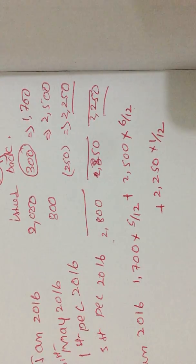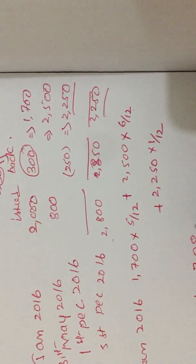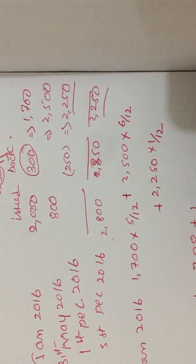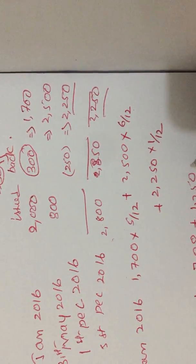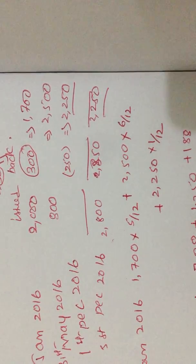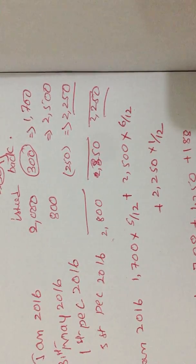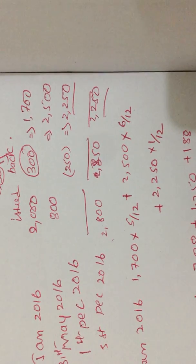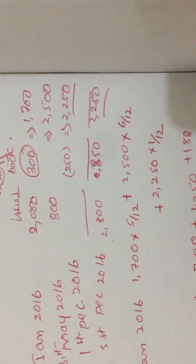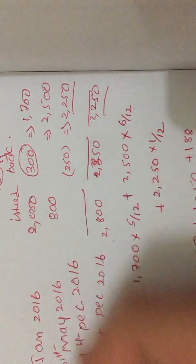Calculating each period: 708 plus 1,250 plus 188 gives a weighted average of 2,146 shares.